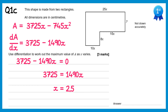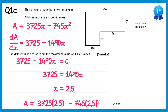Now we need to find the maximum value of A so we substitute x equals 2.5 back in. So A equals 3725 times 2.5 take away 745 times 2.5 squared, and if you type this into your calculator you'll get 4656.25 cm squared because it's area.